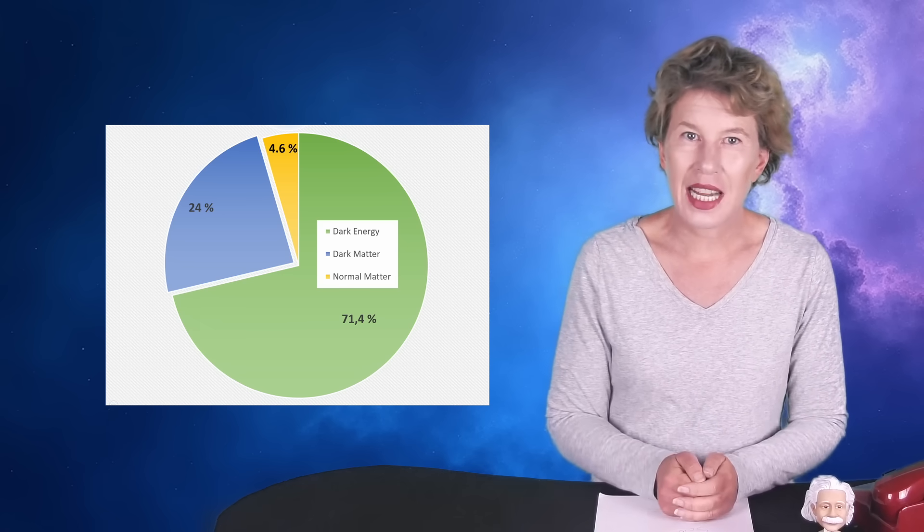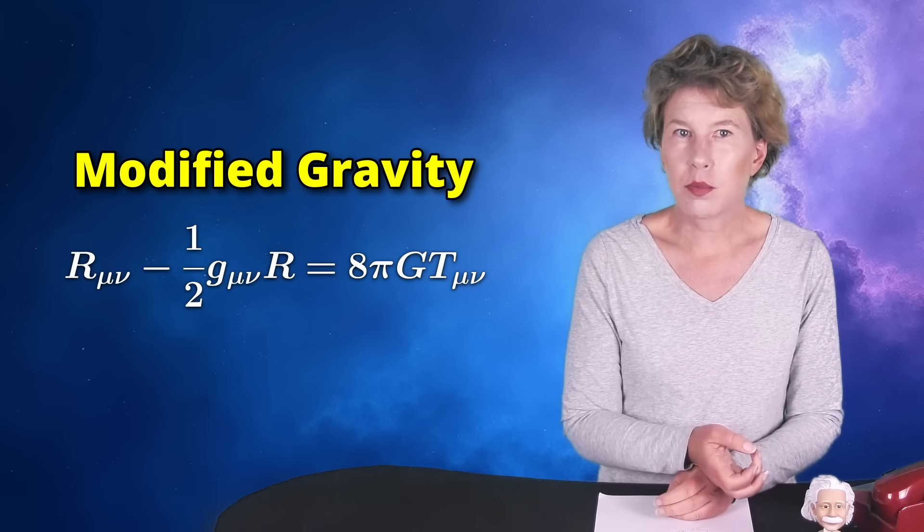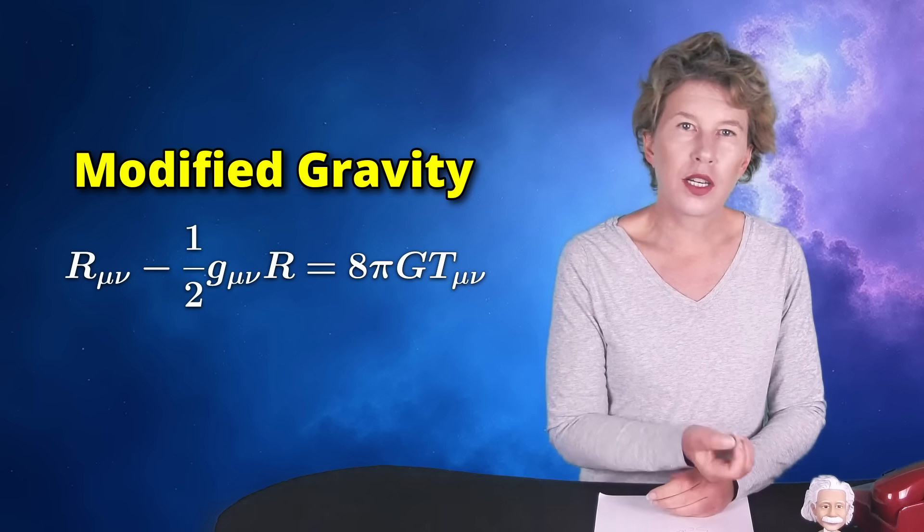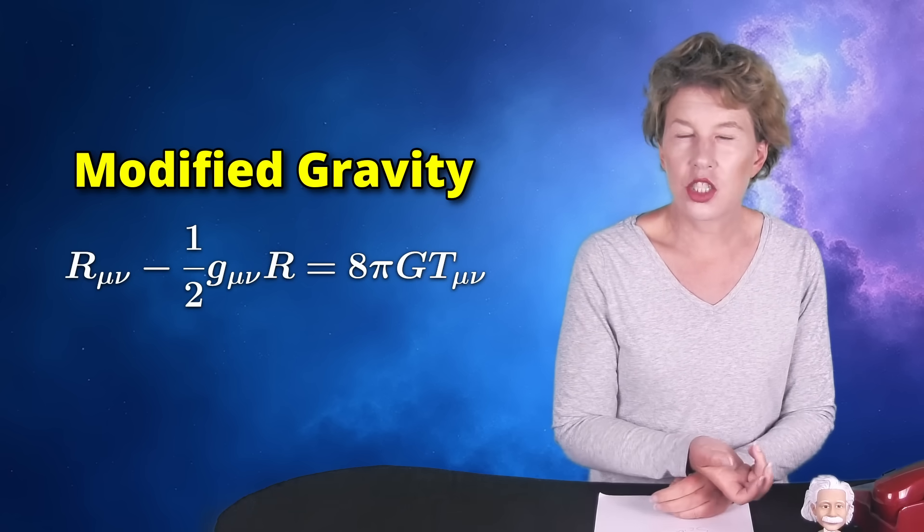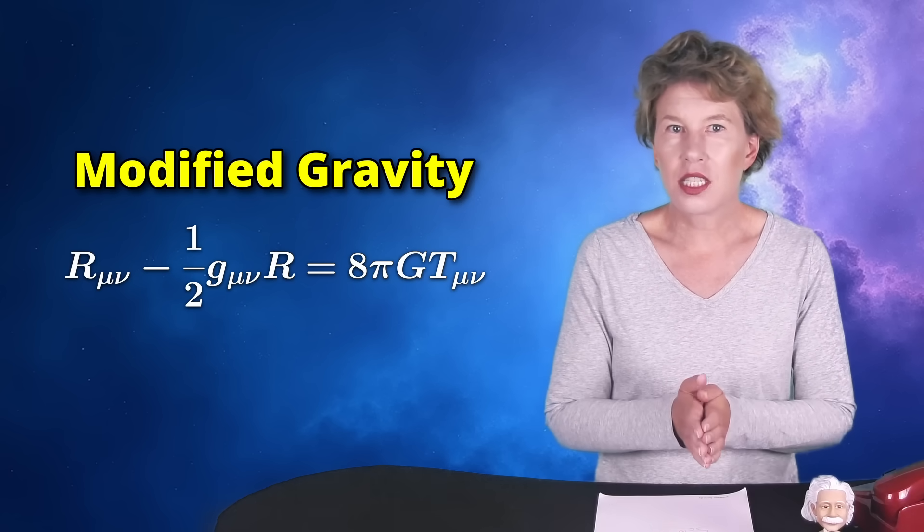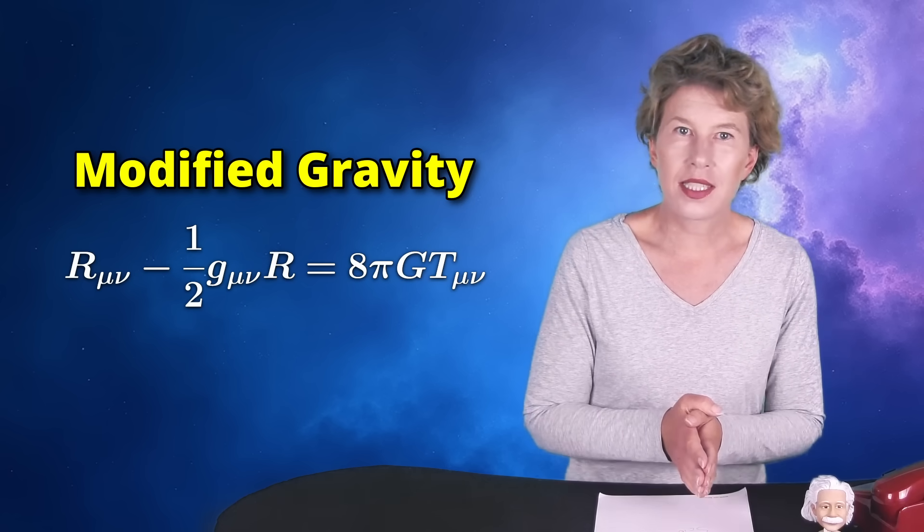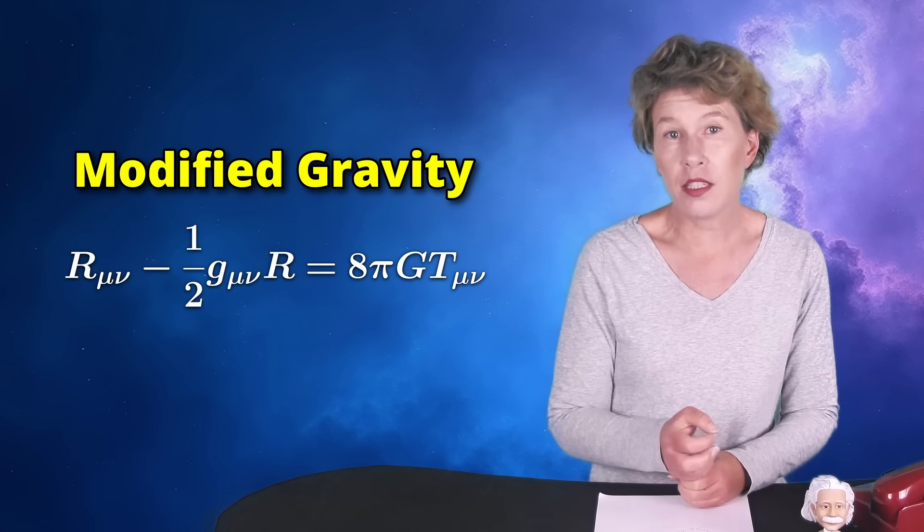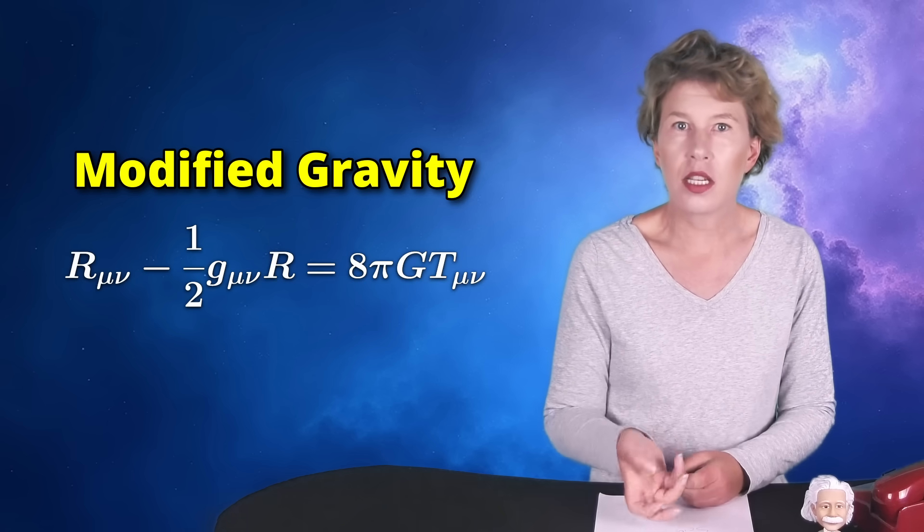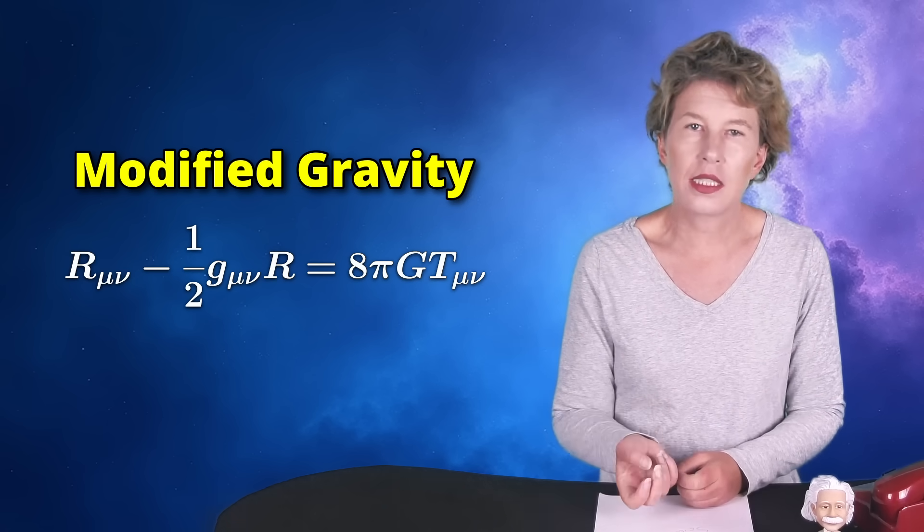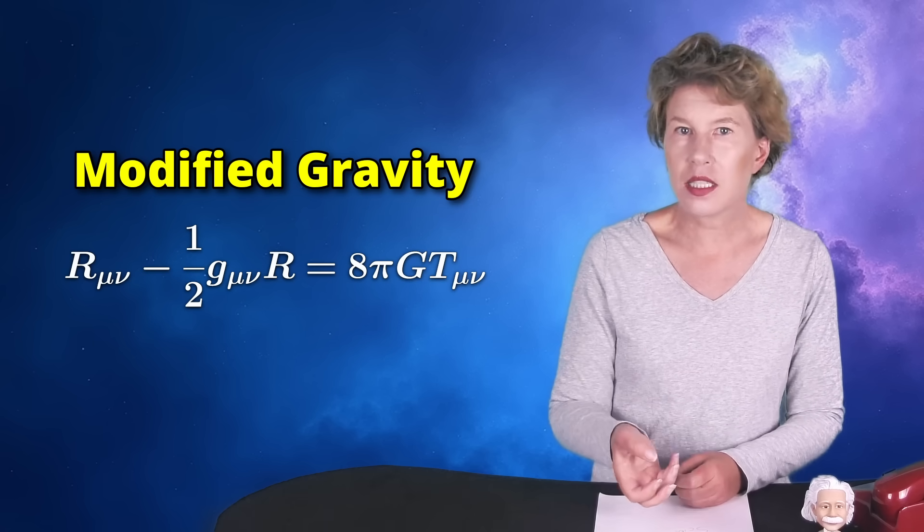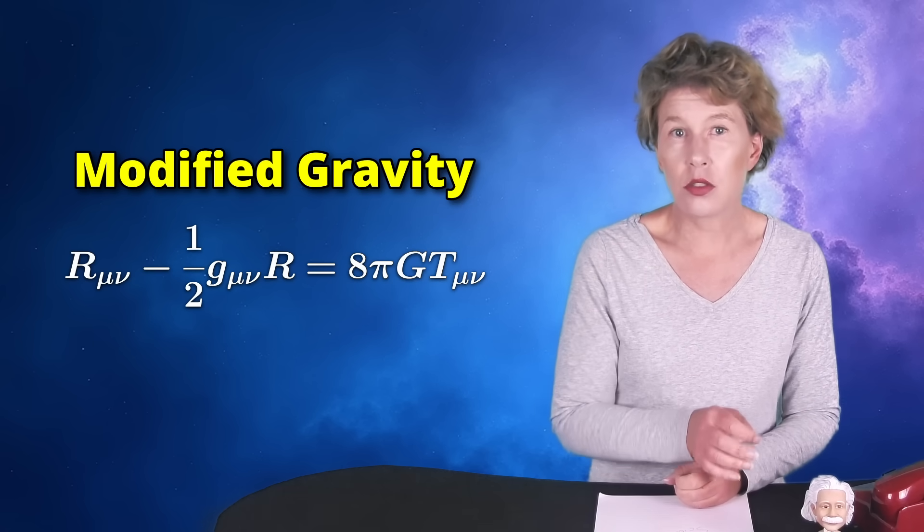This was the original idea in any case. The alternative explanation is that we need to modify the laws of gravity at large distances. This alternative is unpopular among theorists because it's difficult to change anything about Einstein's theory without breaking it completely. Dark matter is mathematically much easier to deal with.